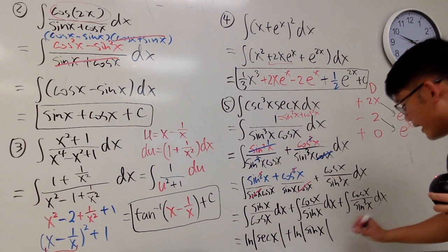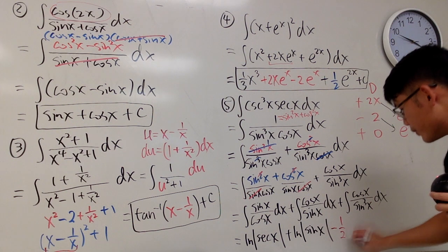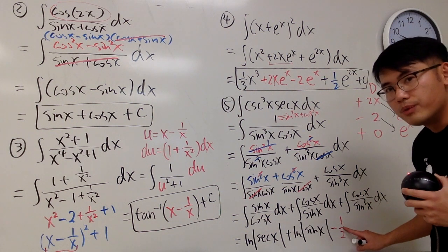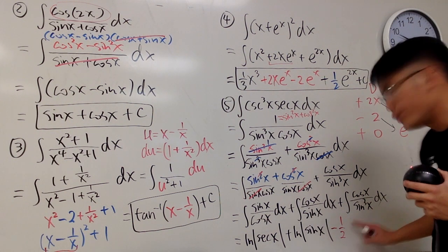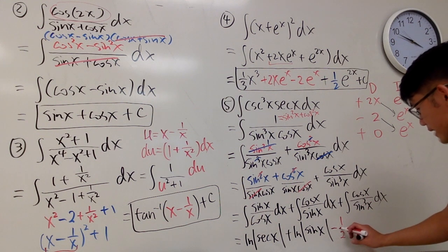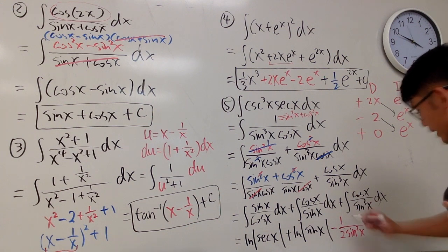You end up with negative 1 over 2, and you get u to the negative 2 power, where u is the sine, so I will just put down the sine in the denominator right here. Sine to the second power x, like that.